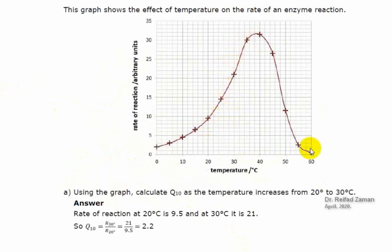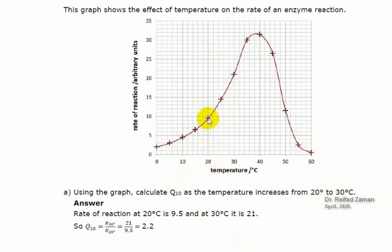Let's look at this graph for example. If we want to find the temperature coefficient between 20 degrees centigrade and 30 degrees centigrade, we do the following. First, we find the rate of reaction at 20 degrees centigrade — here it is — the rate of reaction was 9.5. Then at the final temperature, which is 30 degrees centigrade, the reaction rate was 21.